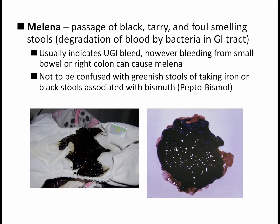The second manifestation is melena — passage of black, tarry, and very foul-smelling stools. Once you smell melena, you won't forget it. Melena is due to the degradation of blood by bacteria in the GI tract, and it must have all three characteristics: black, tarry, and foul-smelling. A formed dark or black stool is not melena. It usually indicates an upper GI bleed, but bleeding from the small intestine or a slow right-sided colonic bleed can also produce melena if there's enough time for bacterial interaction. Don't confuse melena with greenish stools from iron supplements or black stools from Pepto-Bismol, which are formed and lack all the characteristics of melena.